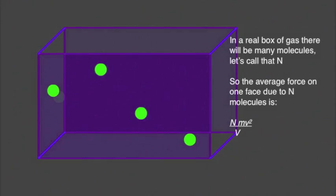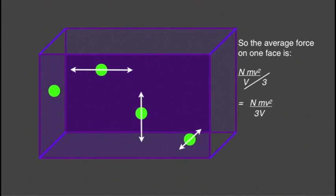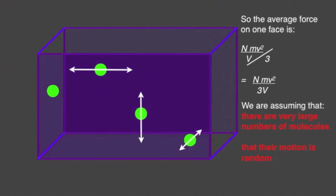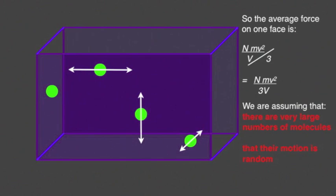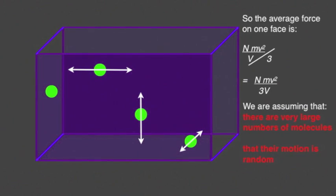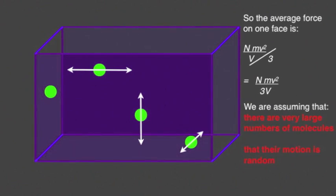And, of course, the molecules won't just be going sideways, they'll be going up and down and backwards and forwards. Because there are three possible directions in which they can travel, the average force, therefore, is divided by three. In making this general assumption that the molecules have a similar effect in every direction, we are particularly assuming that there are a very large number of molecules and that their motion is entirely random.